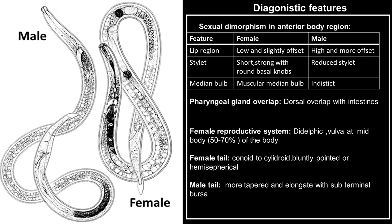These features include the sexual dimorphism in the anterior part of the body. The female nematodes have a lip region which is low and slightly offset. They also have a robust and strong stylet that has round basal knobs. The female also have a distinct pharynx with a metacorpus median bulb.